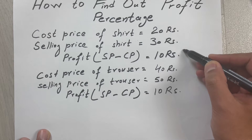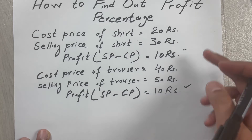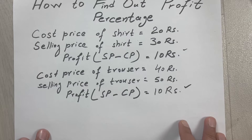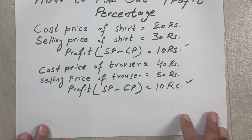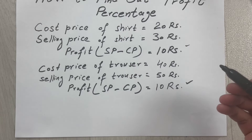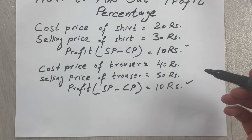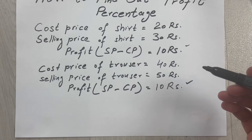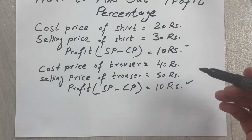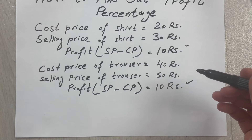So now you can see there are two deals — this is the first deal and this is the second deal. In both deals the profit is the same, which is 10 rupees. But in one of the deals we make a bigger profit. So how can you calculate which deal makes the bigger profit? You have to use the profit percentage formula.